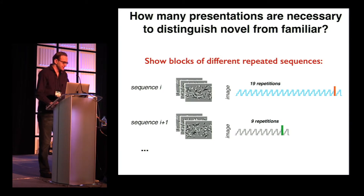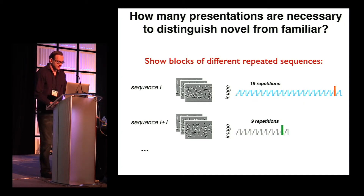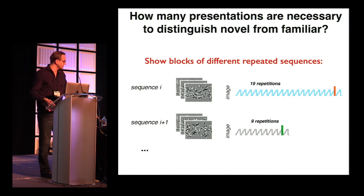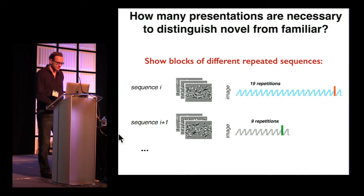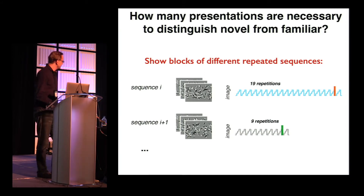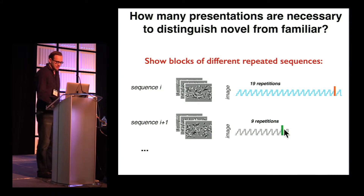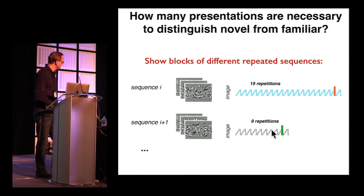We then asked how many presentations are necessary to distinguish novel from familiar. At the beginning of a sequence, the images themselves are novel, but after a while the cell should pick up on the regularity and respond differently to sequence images versus the novel image. We generated sequences and displayed them for a predefined number of repetitions, using a different sequence each time, randomized and repeated many times.